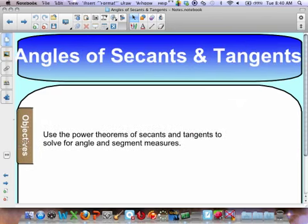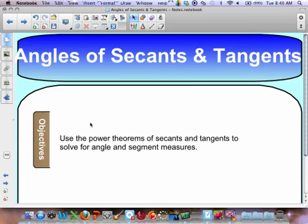So our objectives are pretty simple. We're going to use the power theorems of secants and tangents. And those are right down here at the bottom of your record sheet on page 2. There are six circles. Okay, so on your version there's nine. And what we're going to be talking about today are the last five.